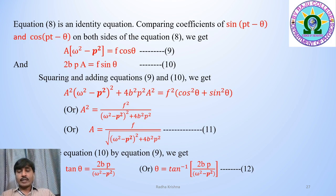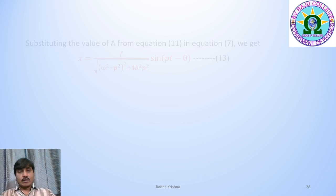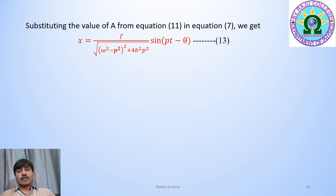Dividing equation 10 by equation 9, we get tan θ = 2bp / (ω² − p²), so θ = tan⁻¹[2bp / (ω² − p²)]. This is equation 12. Here, A is the amplitude of the forced oscillator and θ is the phase difference between the external periodic force and the displacement. Substituting the value of A from equation 11 into x = A sin(pt − θ), we get the complete solution: x = [f / √((ω² − p²)² + 4b²p²)] sin(pt − θ).